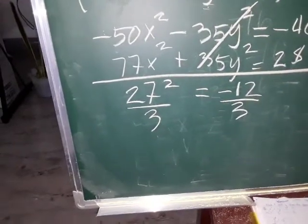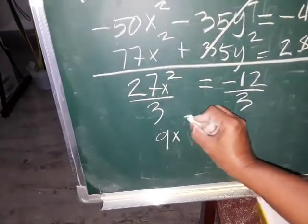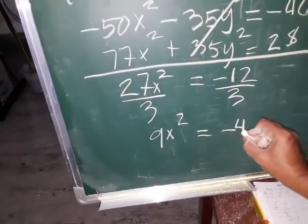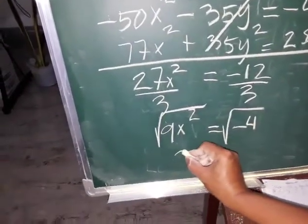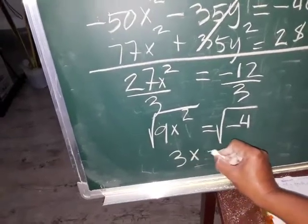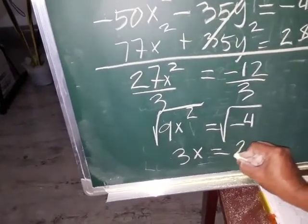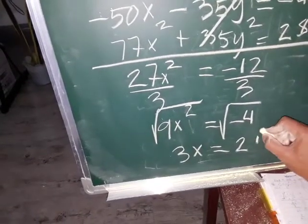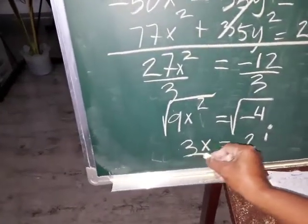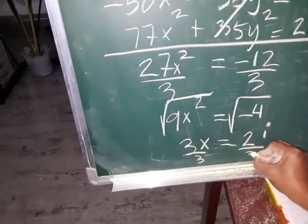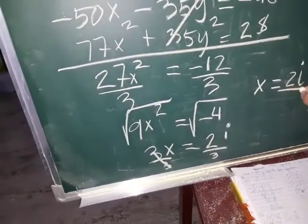So 9x squared is equal to negative 4. Take the square root of both sides — since the result is negative, we put i. So square root of 4 is 2, and since it is negative, we write 2i. Then divide by 3 on both sides. So our x is equal to 2i over 3.